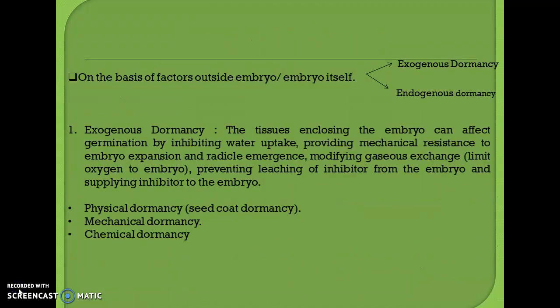The other type of seed dormancy is based on factors outside the embryo or the embryo itself — that is, exogenous dormancy and endogenous dormancy. In exogenous dormancy, it is imposed by factors outside the embryo, and endogenous dormancy is imposed by the embryo itself.